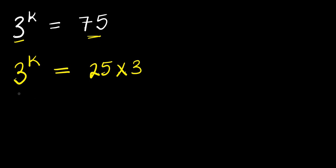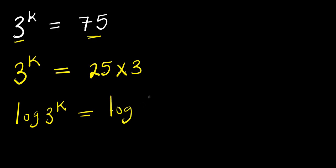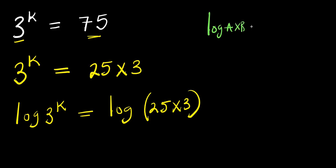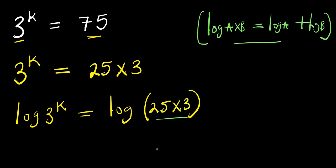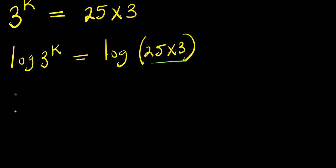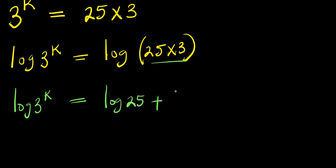So I can decide to apply log: log of 3 to the power of k equals log of 25 times 3. Now, if you have log(a times b), this equals log a plus log b. Applying this property, I will simply have log of 3 to the power of k equals log 25 plus log 3.